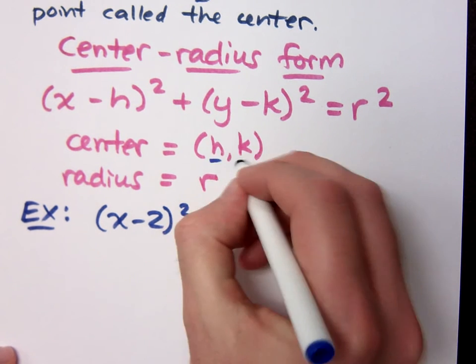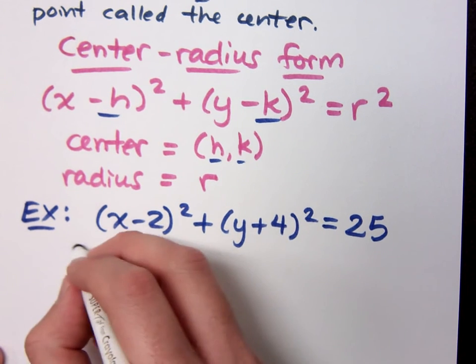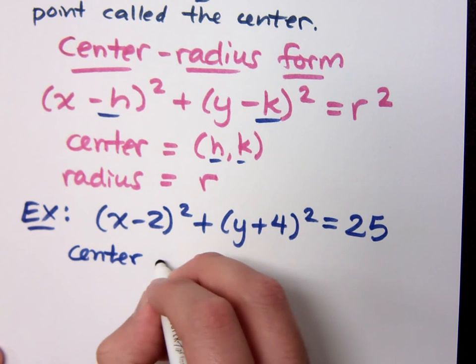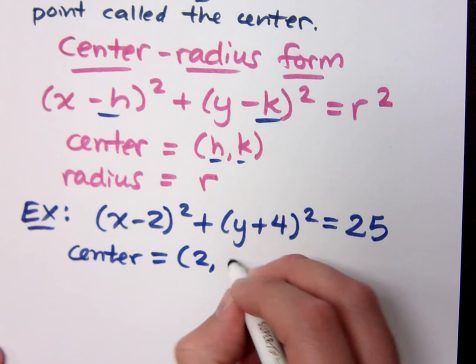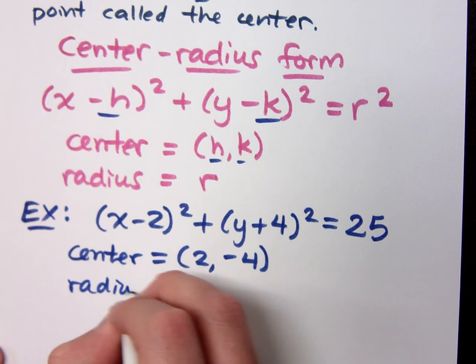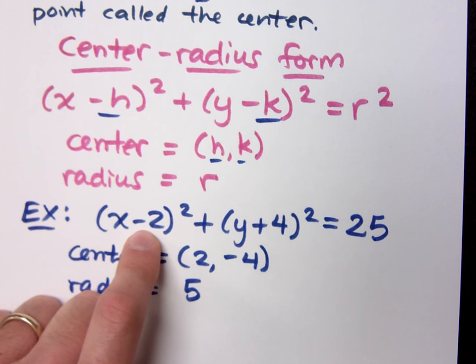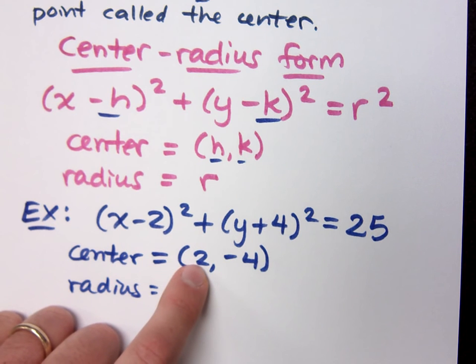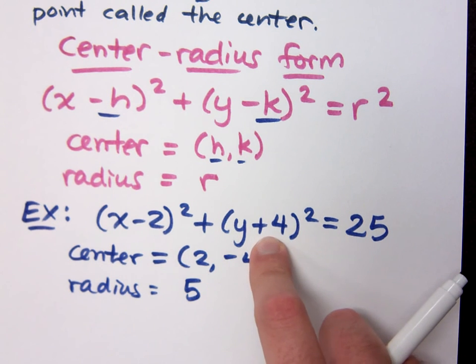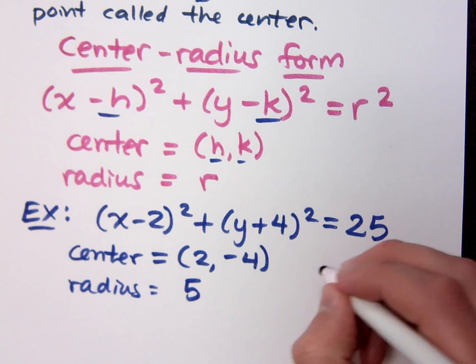Remember what I said about h and k. It's the opposite of what you see there. So what are the coordinates for your center? 2 and negative 4. You may say, Mr. Craig, I see a minus 2. I know you see a minus 2, but I'm asking you to do the opposite of what you see. That's a positive 2. I see a positive 4, but what's the opposite of that? Negative 4.